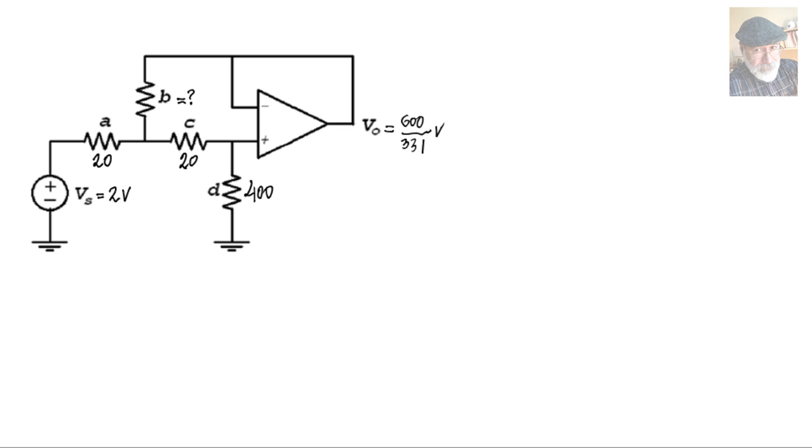Let's work on the first question of the third main term. In a configuration like this with one op-amp, we knew that the output we wanted was 600 over 331 volts when the input was 2 volts.